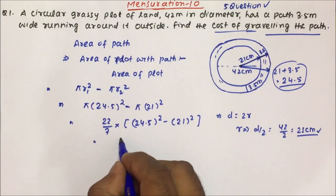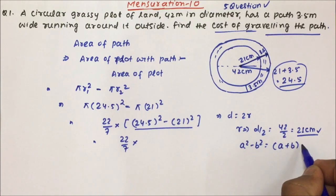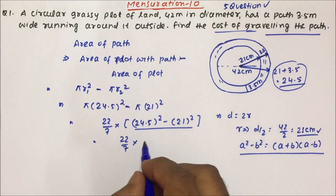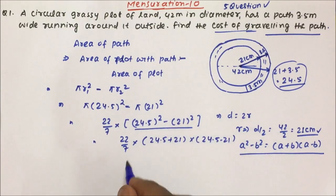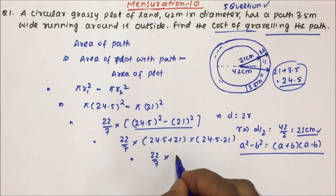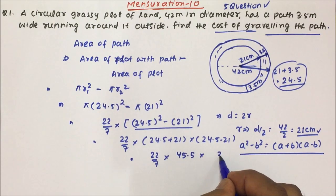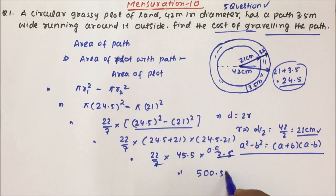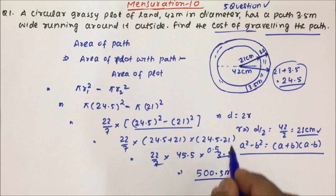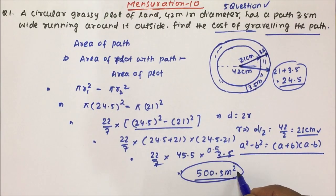So that becomes 22/7 × 45.5 × 3.5. Dividing and multiplying through, the area of the path works out to 500.5 square meters. So the area of the path is 500.5 m².